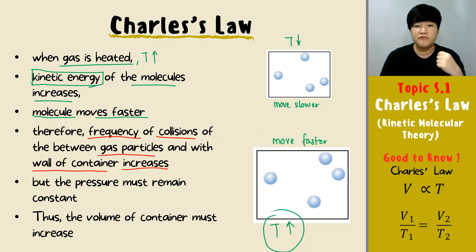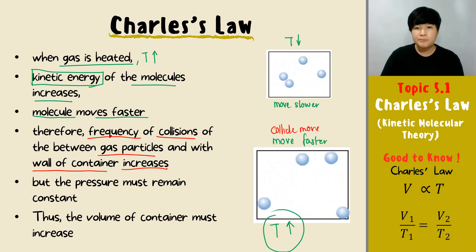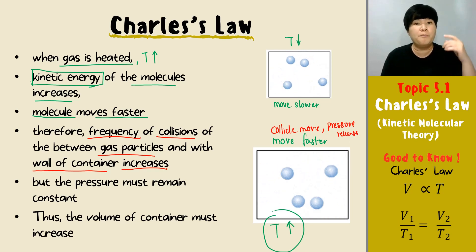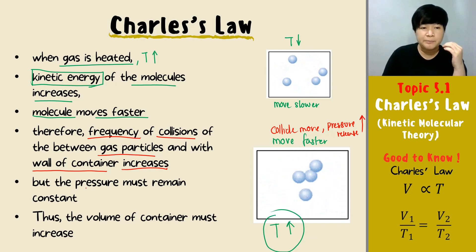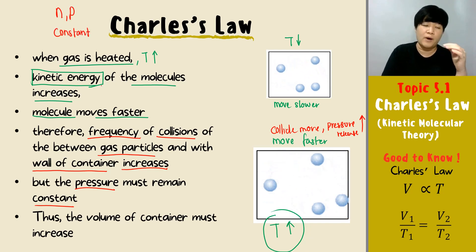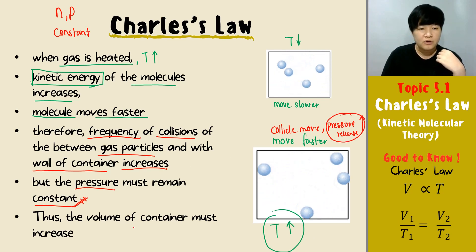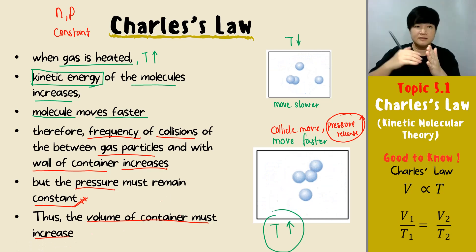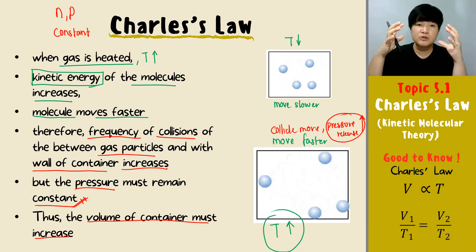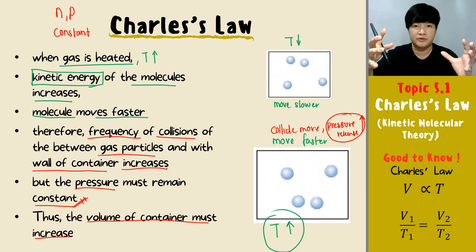When you collide more, pressure is released — so the pressure shall tend to increase. But the pressure must remain constant because in Charles' Law, the number of moles and the pressure must remain constant. So to decrease the pressure, we increase the volume of the container. That is why when the temperature increases, the particles expand — we want to reduce the pressure produced and ensure that the pressure remains constant. That is why when the temperature increases, the volume increases.